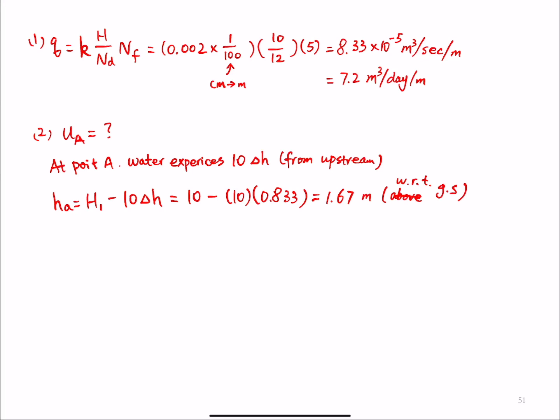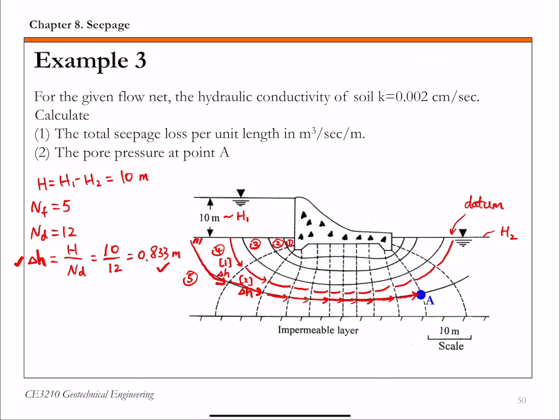And then the elevation head is ZA. And ZA is something again you read directly from the graph. So you are given this scale. So that's 10 meters. So you are given this scale.